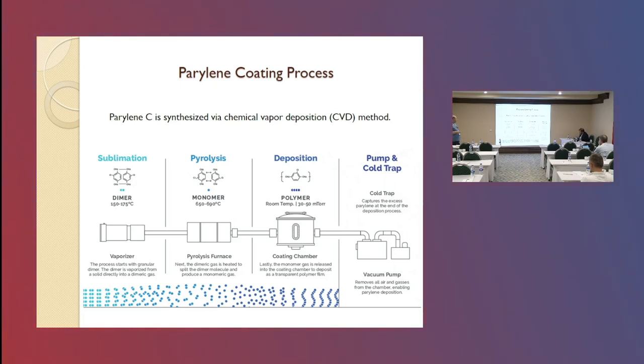Later, the dimeric gas is transferred into the pyrolysis furnace. The temperature of the pyrolysis furnace is 650 Celsius. When dimeric gas goes through into this furnace, dimeric gas is heated and split into the monomeric gas.